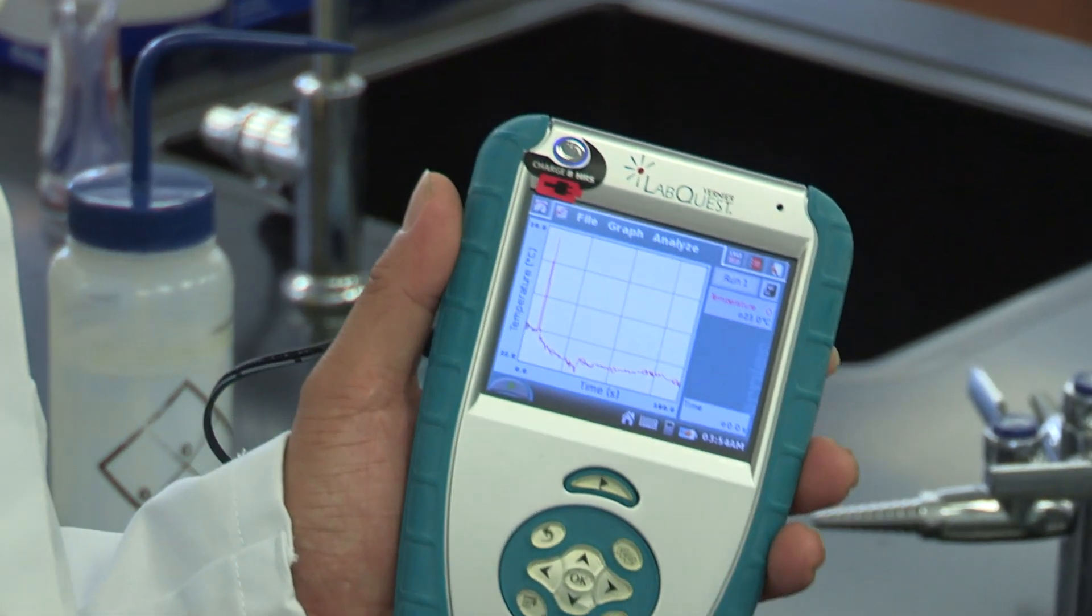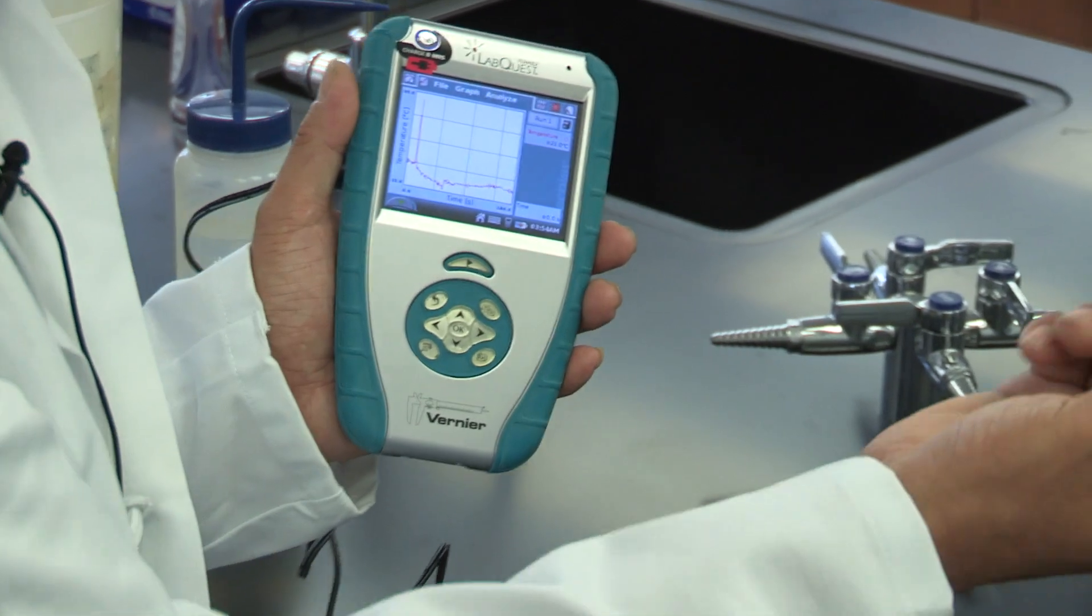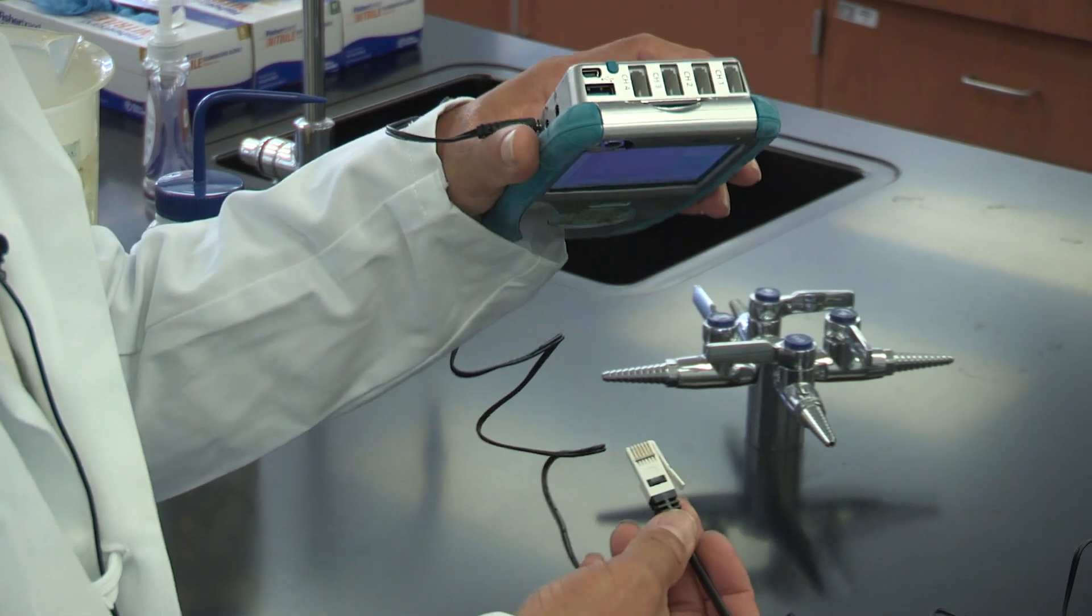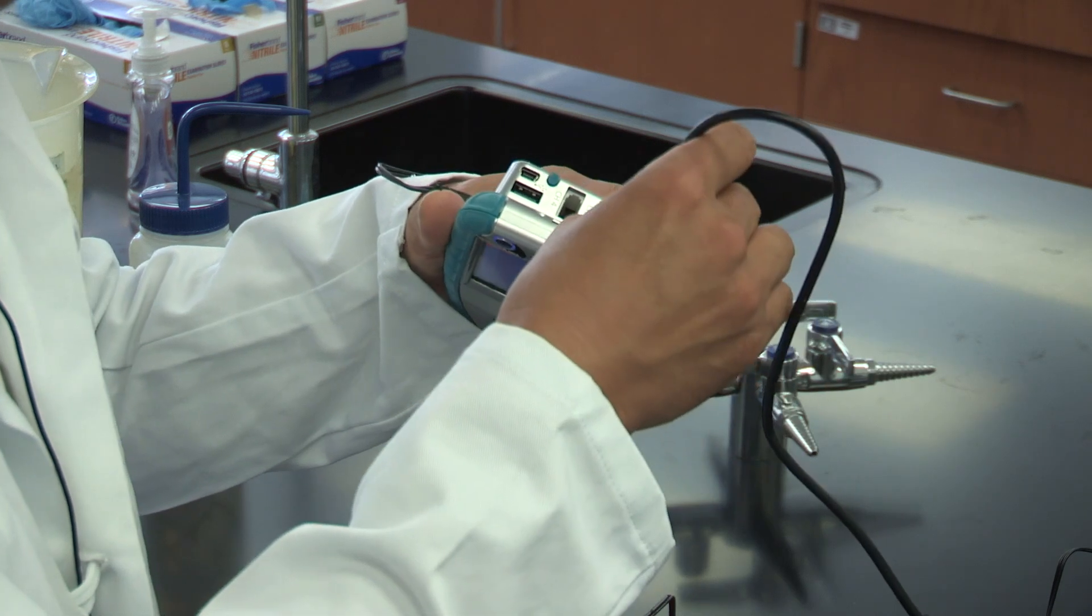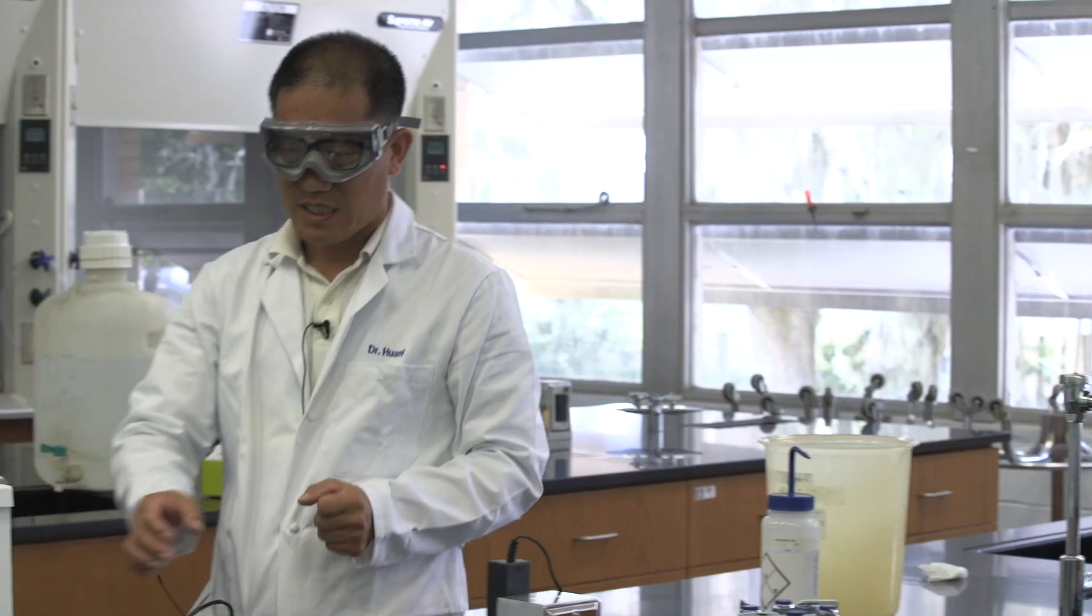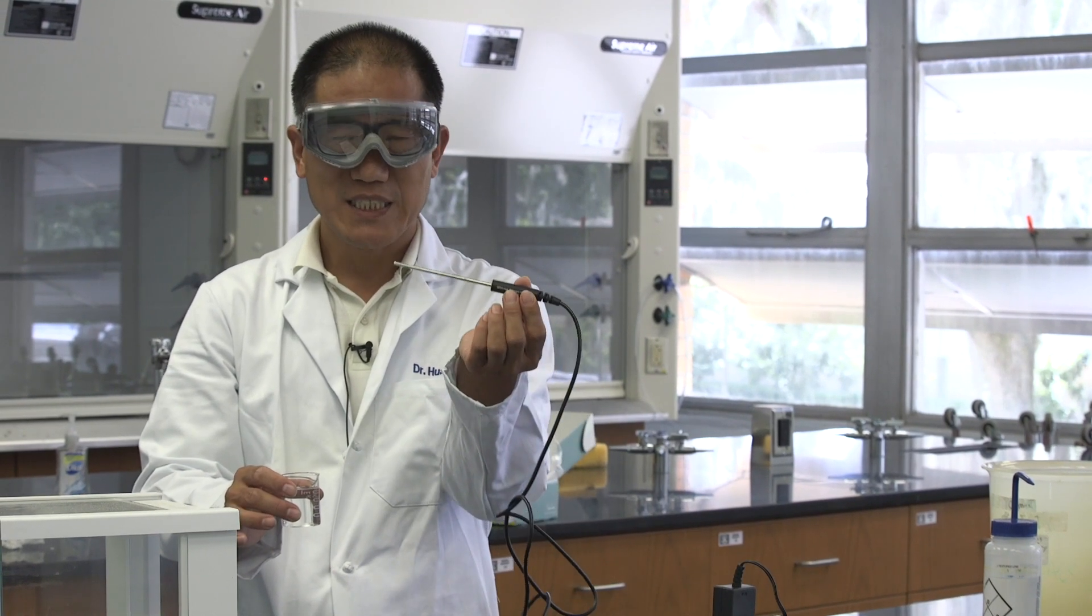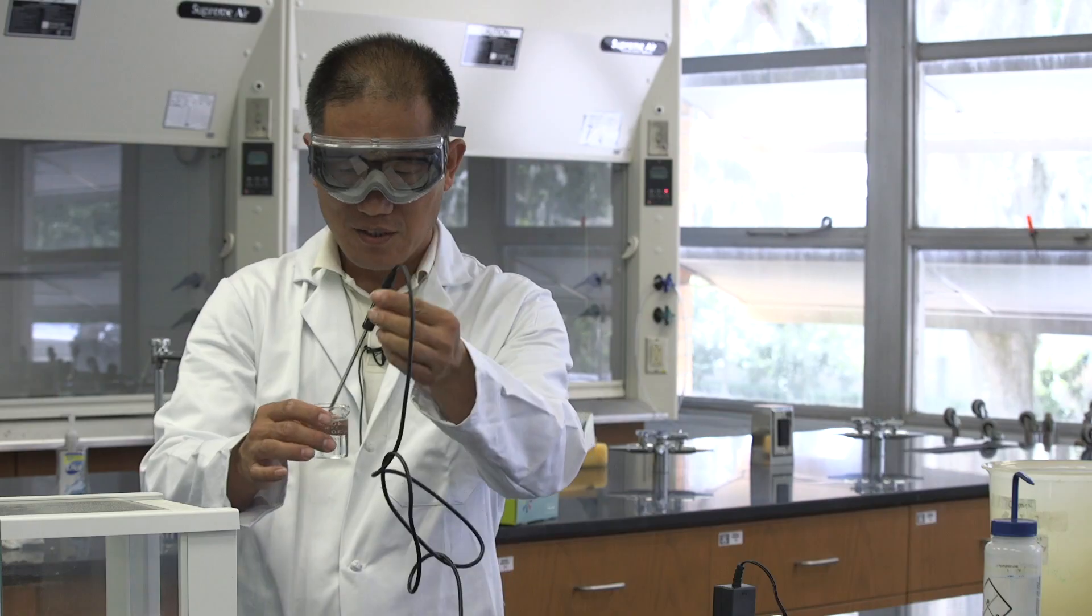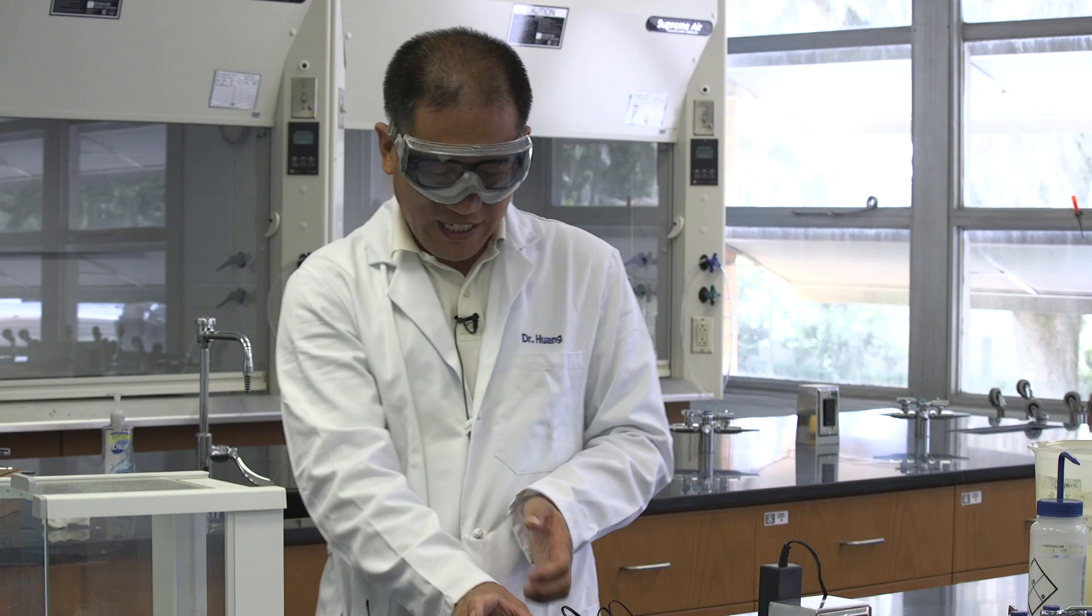This is a LabQuest product. We can attach different sensors to take different measurements. In this particular experiment, we are trying to determine the temperature of the liquid we are using. This is the temperature probe. Look at this end. And we can find an empty slot on the LabQuest device and then insert it in. We should hear a click. This is the liquid we are using. And this is the temperature probe. All we need to do is we insert the probe into the liquid. Let's look at the temperature of the liquid.